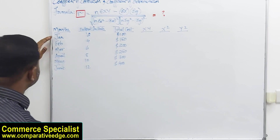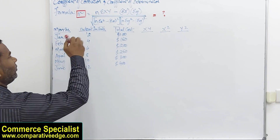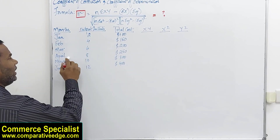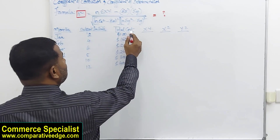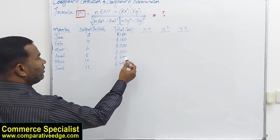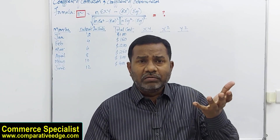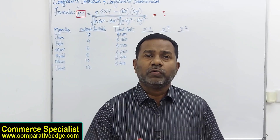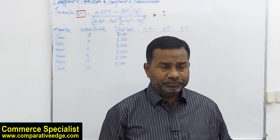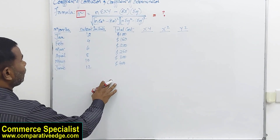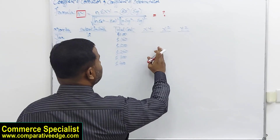Consider this example: there are six months given — January to June. Output in units is 2, 4, 6, 8, 10, and 12. The corresponding total cost is $100, $150, $200, $250, $300, and $400. We are trying to find out whether there is a relationship between making more units and having a higher total cost, or whether the more you produce, the less the cost.